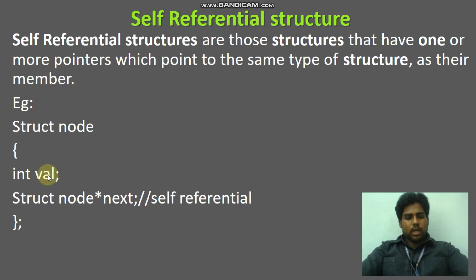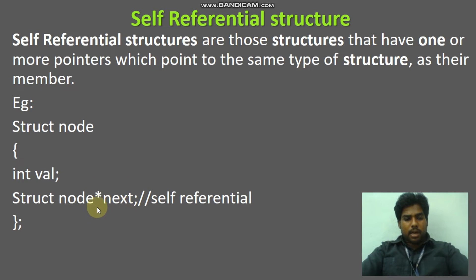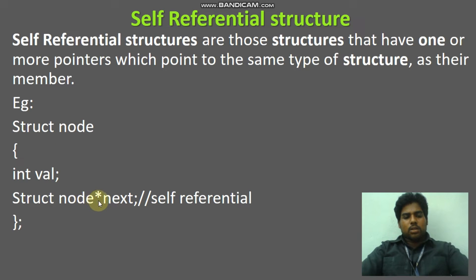Here, one value is there. Self-referential structure means it has one pointer variable. See here, 'next' is the pointer variable. So one structure member is the pointer — which belongs to which type? The same node type. So the same type of structure is finding a pointer here. That is called a self-referential structure.